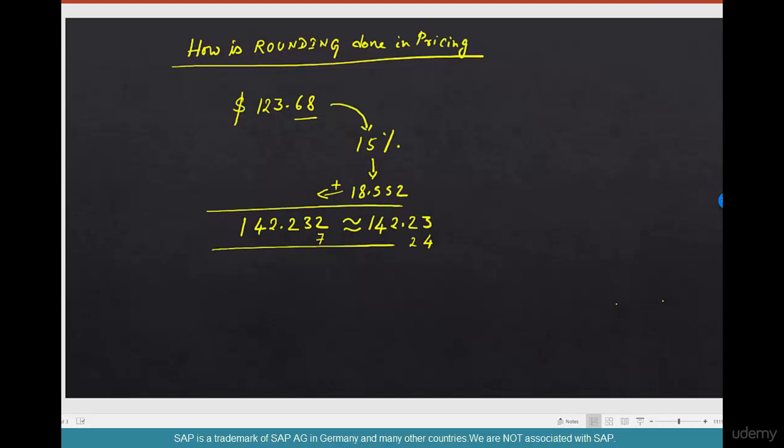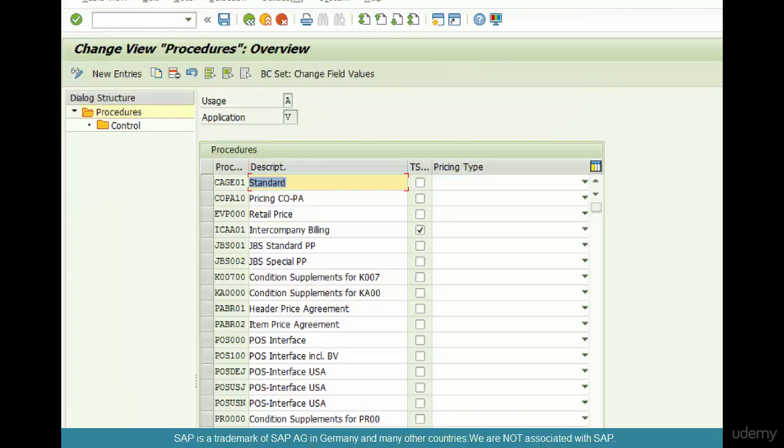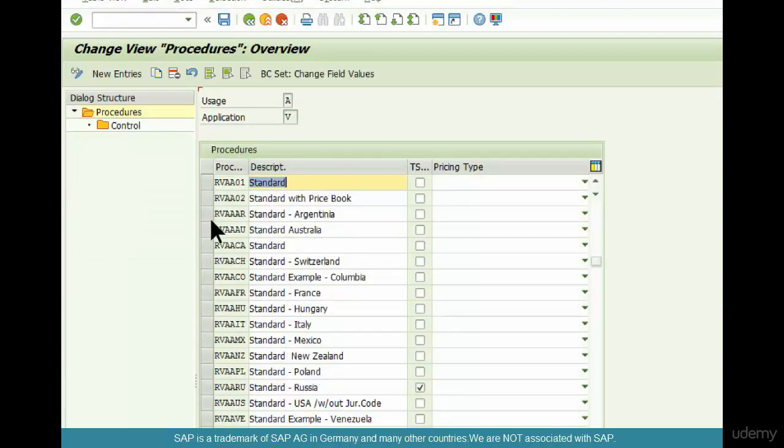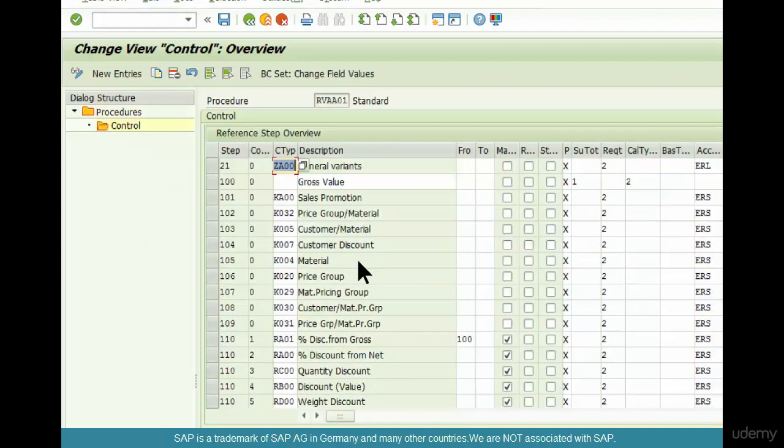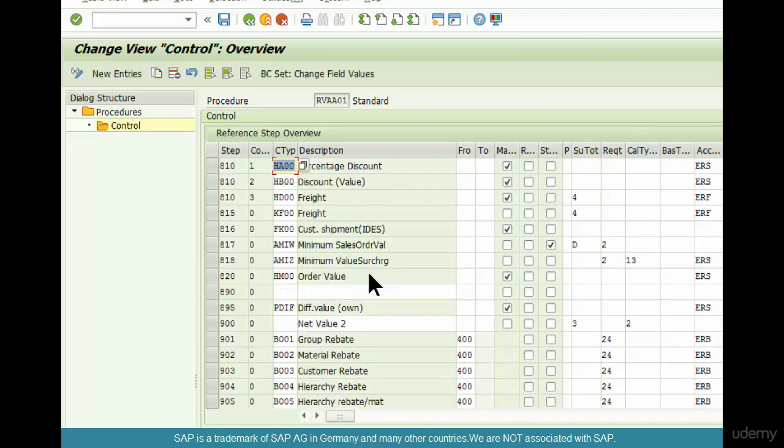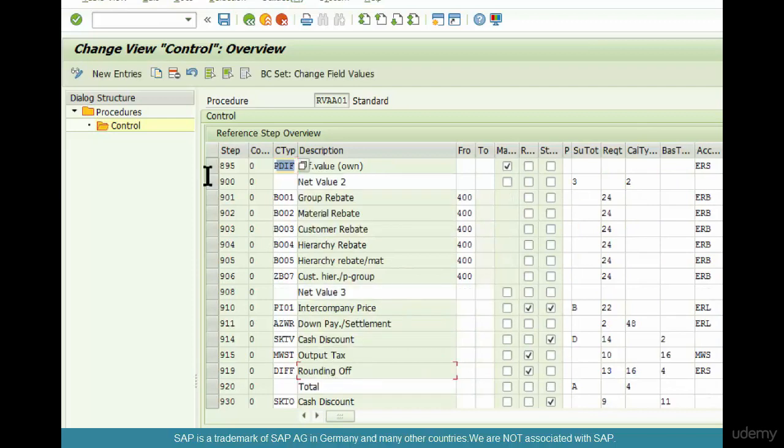And at the condition type level, if you look at a typical pricing procedure V/08 and then look for RVA01, the standard pricing procedure for Germany, you'll see that there is a pricing condition type that's provided out of the box called DIFF (D-I-F-F), not PDIF but DIFF. So this is the condition type DIFF.